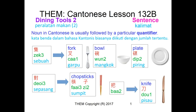Nouns in Cantonese are usually followed by a particular quantifier. For example, for spoon, fork, bowl, or plate, we use a quantifier called 石. As for chopsticks, we use 刀. As for knife, we use 把.